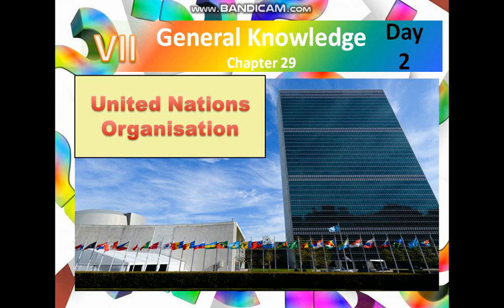Hello students, welcome to the general knowledge session. Today let's cover the 29th chapter — it is about specialized agencies and organizations of the UN. The United Nations is an international organization founded in 1945 after the Second World War by 51 countries. It is committed to maintaining international peace and security, developing friendly relations among nations, and promoting social progress, better living standards, and human rights. It is currently made up of 193 member states. This is the UN headquarters in New York City.